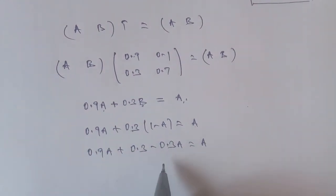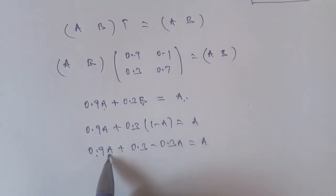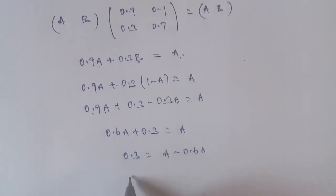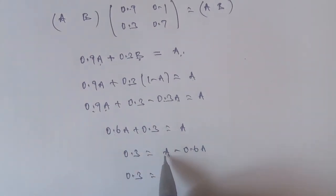Next, 0.9A plus 0.3 minus 0.3A equals A. So, 0.9A minus 0.3A is 0.6A plus 0.3 equals A. 0.3 equals A minus 0.6A, that is 0.4A.